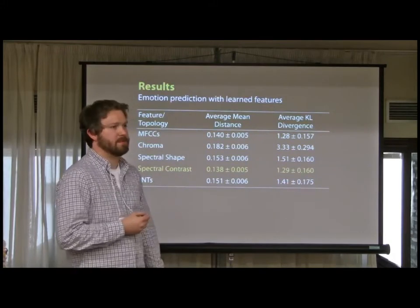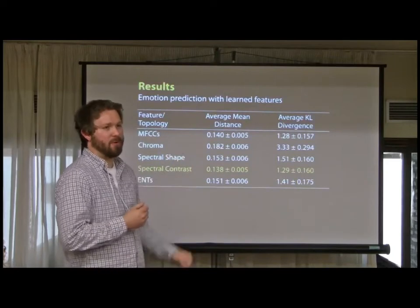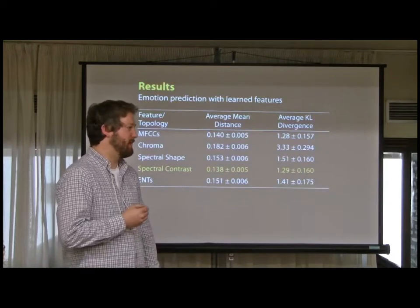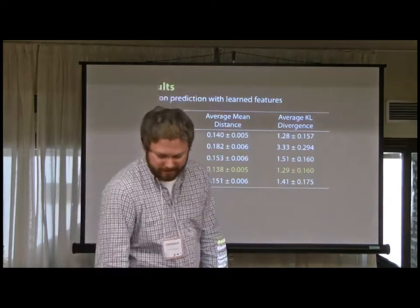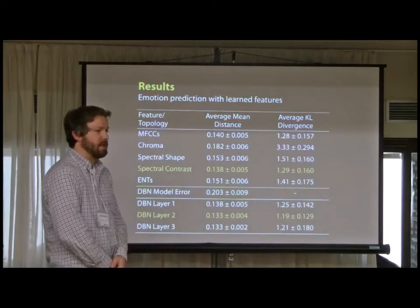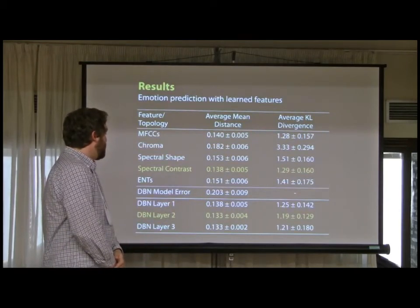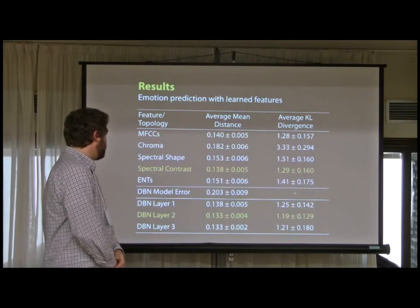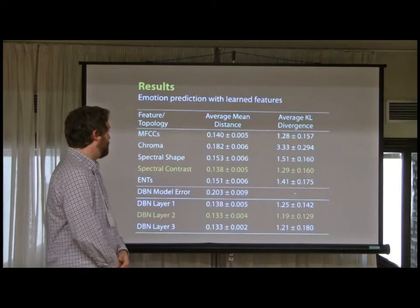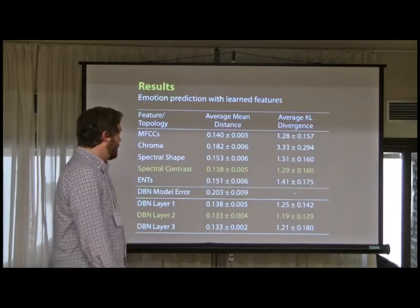I tend to emphasize that mean distance is a much more important metric, because the mean has to be accurate — if the covariance is rotated incorrectly we can deal with that, but if the mean is wrong, that's really bad. Now looking at using the DBN: just using the model's regression layer output, we're up at about 20% error. But the best layer is layer 2, and we get down to 13.3% — a small improvement. We also go from KL 1.29 down to 1.19.